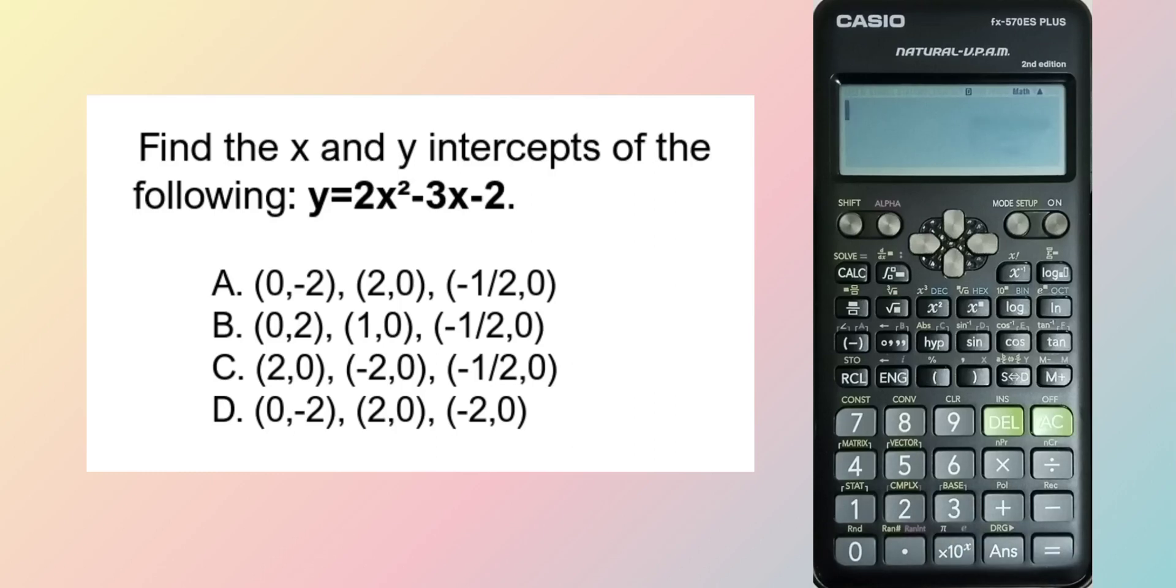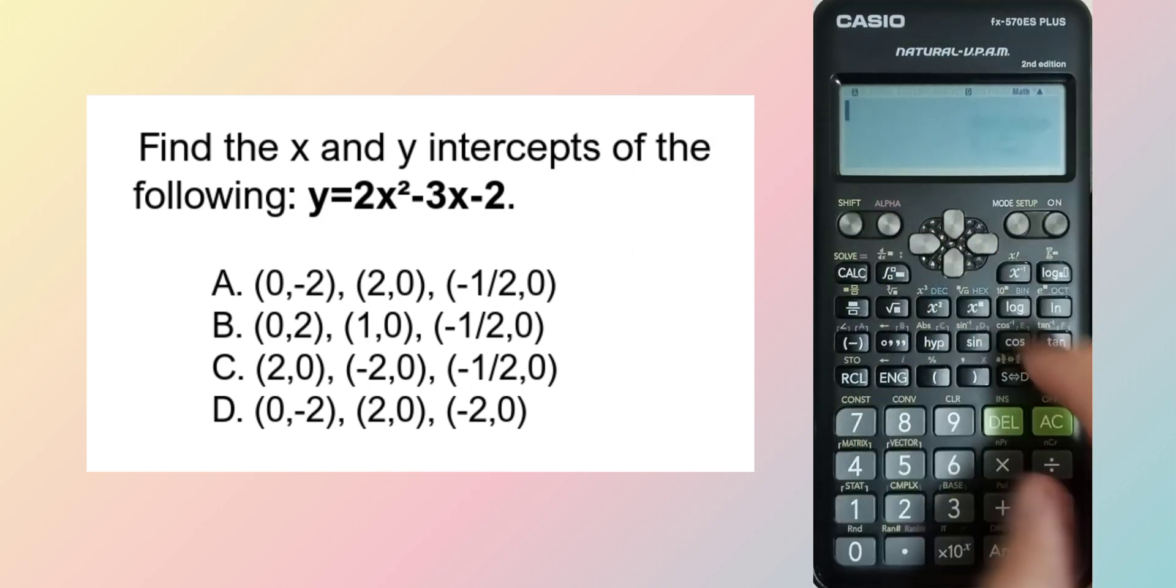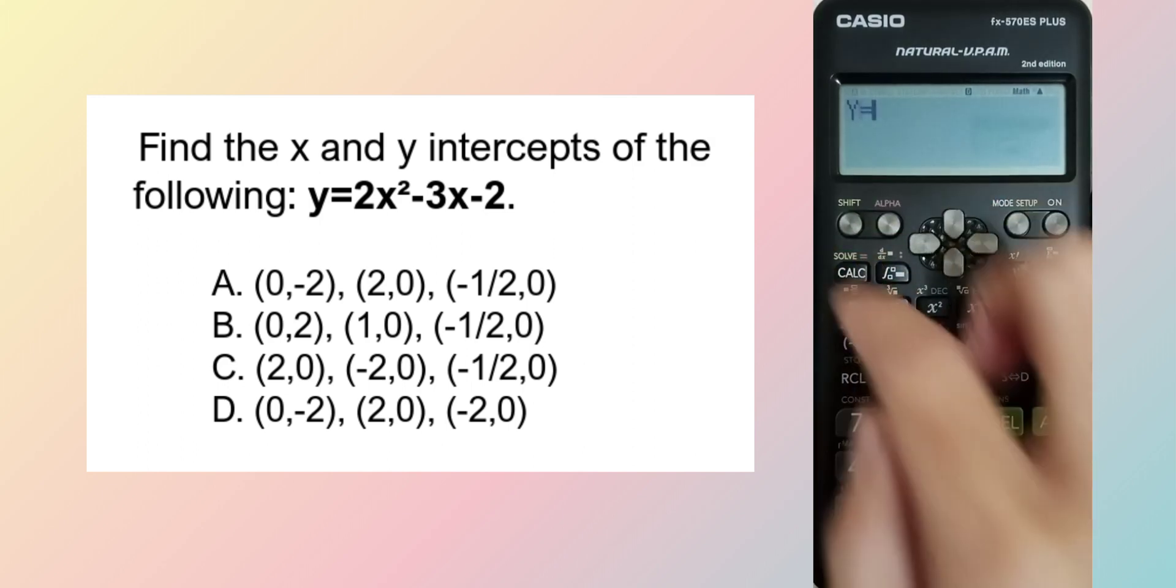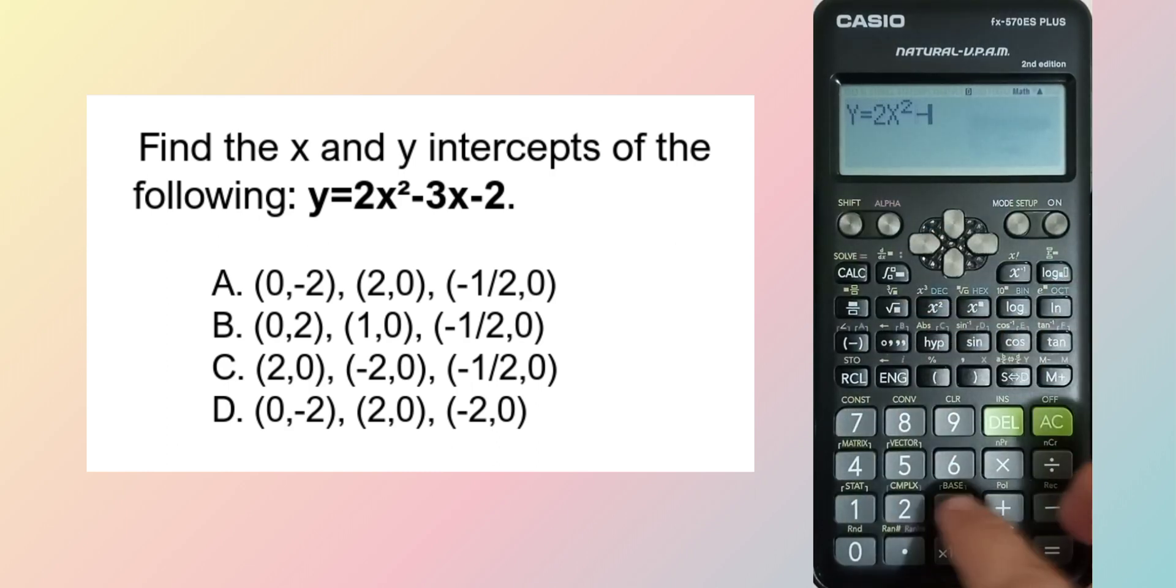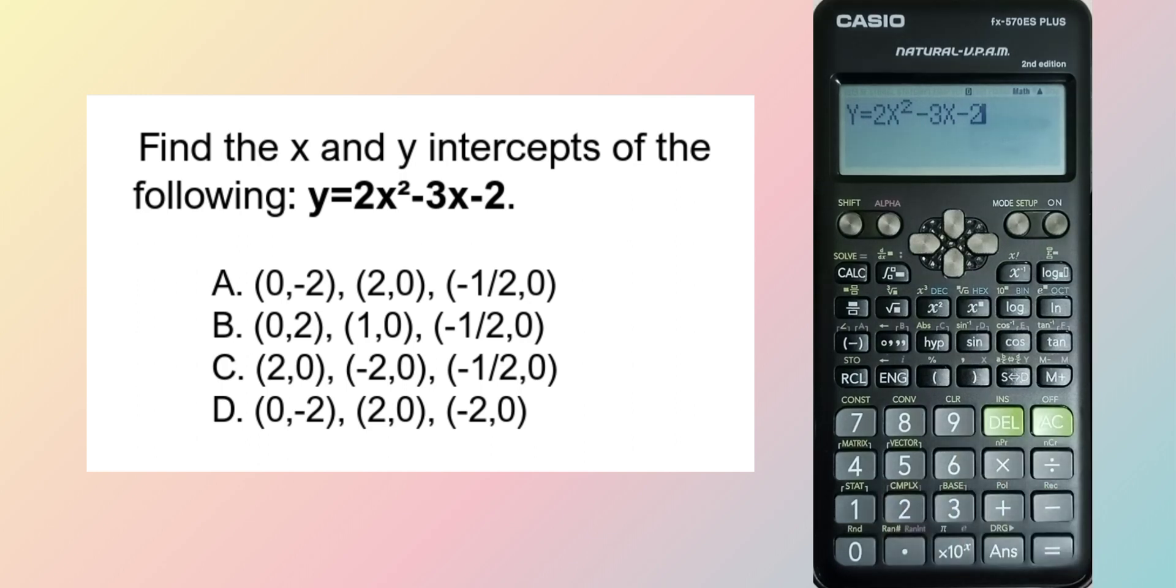Find the x and y intercepts of the following: y = 2x² - 3x - 2. We have to find the x and y intercepts by substituting 0 to x and y respectively.